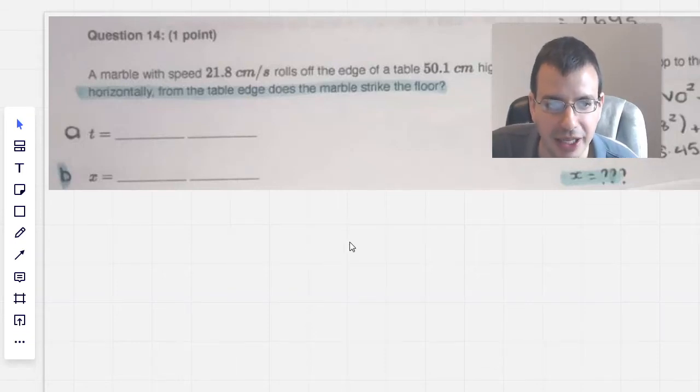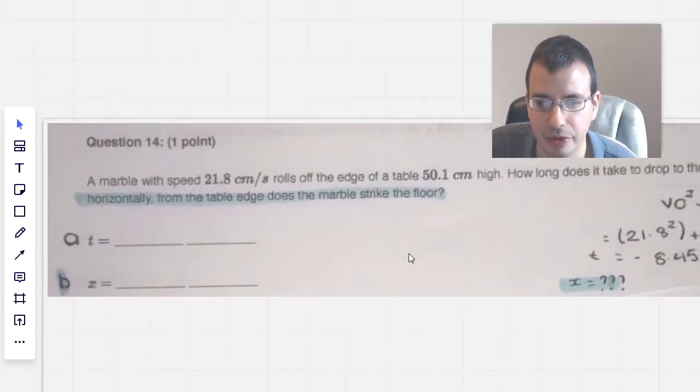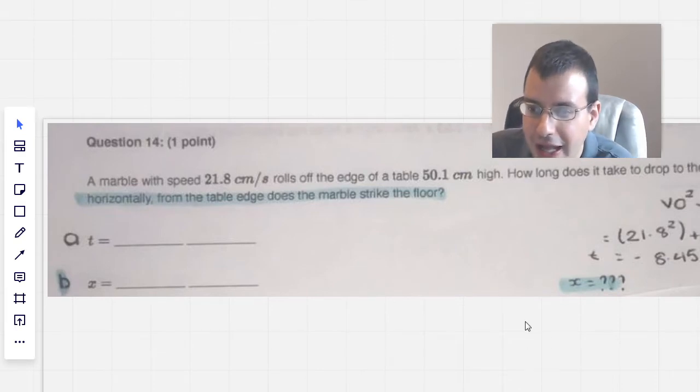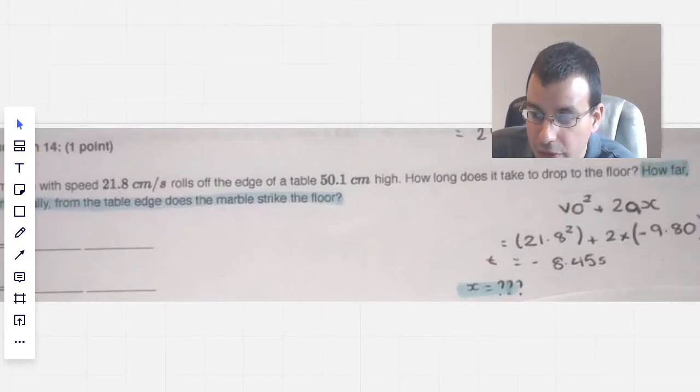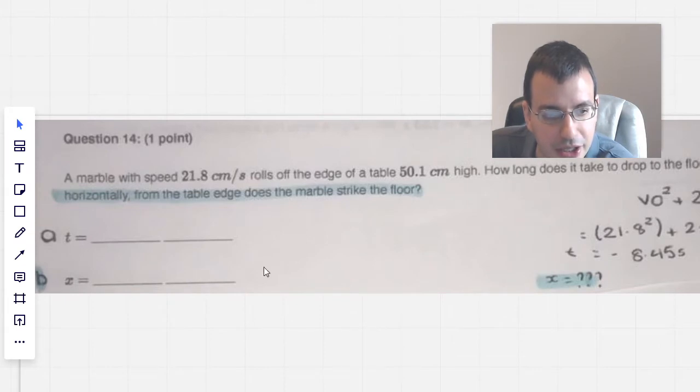A marble with speed 21.8 centimeters a second rolls off the edge of a table 50.1 centimeters high. How long does it take to drop to the floor? And how far horizontally from the table edge does the marble strike the floor?